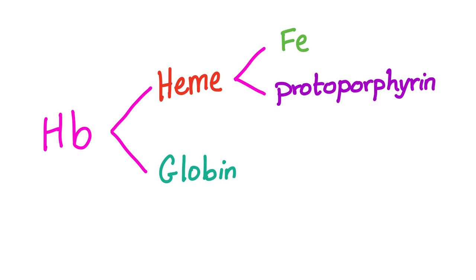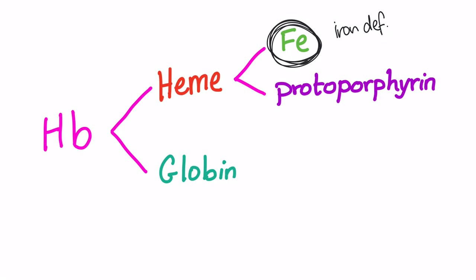Protoporphyrin has a different pathway which we will discuss later. So the causes of microcytic anemia: iron deficiency anemia affects the iron step in the hemoglobin synthesis pathway.